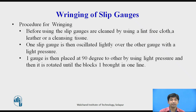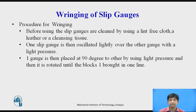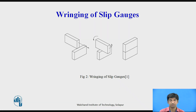The gap between two rung slips is only of the order of 0.00635 microns, which is negligible. Procedure for ringing: before use, slip gauges are cleaned using a lint-free cloth, leather, or cleansing tissue. One slip gauge is oscillated tightly over the other with light pressure, then placed at 90 degrees to the other and rotated until the blocks are brought in line — this is ringing of the slip gauges.